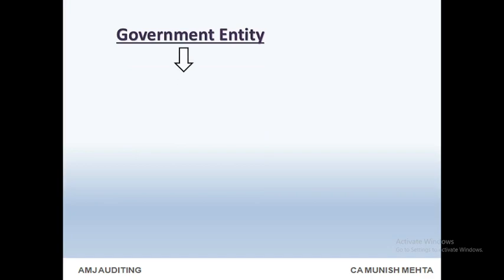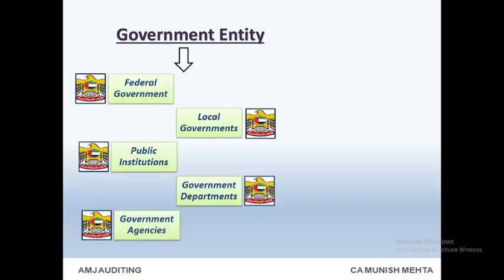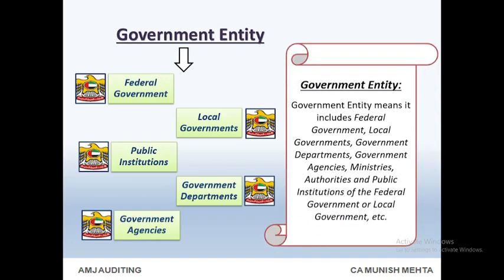Government Entity: a government entity includes federal government, local governments, government departments, government agencies, ministries, authorities, and public institutions of the federal government or local government, etc.